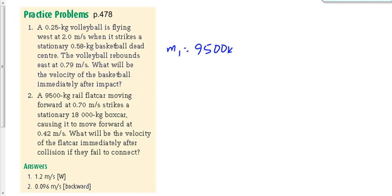Let's write down some givens. M1 is 9,500 kilograms, M2 is 18,000 kilograms. By the way, what would happen if you decided to make the rail car M2 and the boxcar M1? Would that change anything? Not at all. Just change the order in which you wrote down the numbers in your equation, not going to change the answer. Something is 0.70 meters per second. Something is 0.42 meters per second. And we're looking for something. Tell me what's 0.7, is it V1 or V2? V1. It's the flatcar. Is it V1i or V1f? V1i.